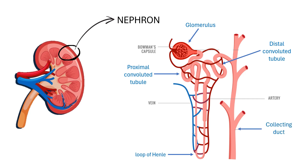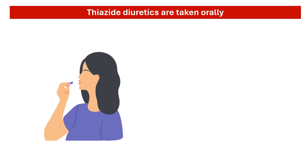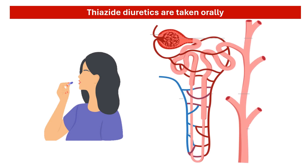Thiazide diuretics act specifically on the distal convoluted tubule of the nephron. They are taken orally, and once in the blood, they travel to the kidneys where they are secreted by the proximal convoluted tubule into the lumen of the renal tubule. They then travel along with the filtrate until they reach the distal convoluted tubule.